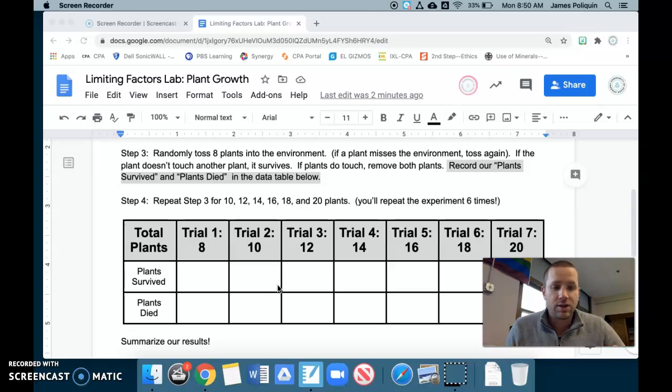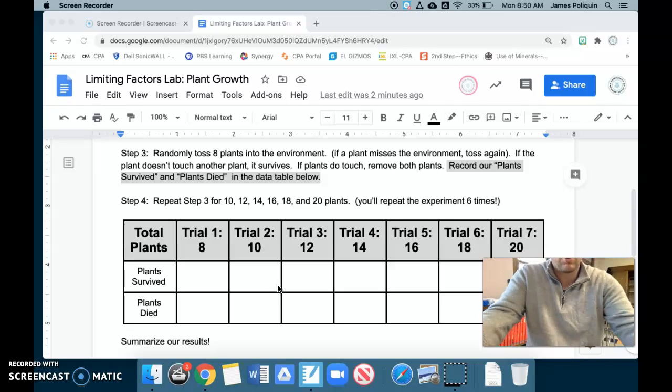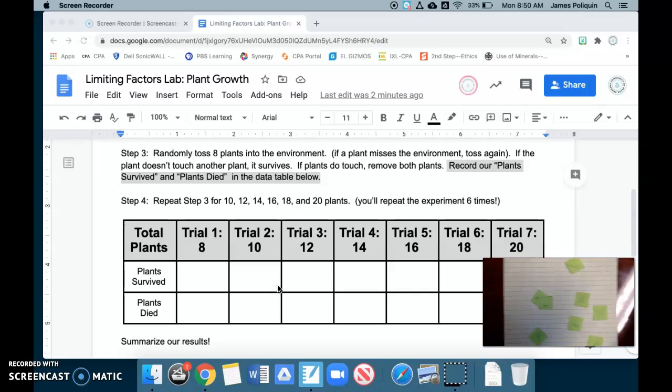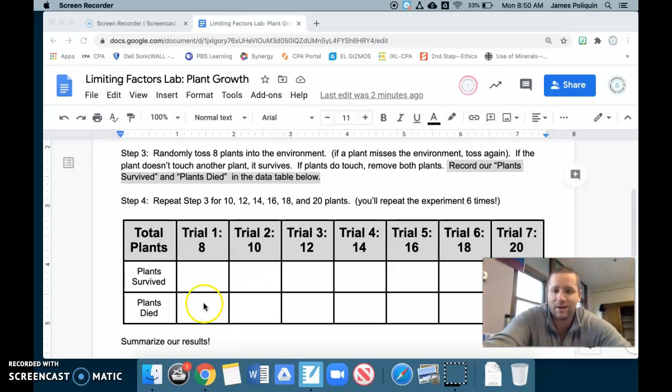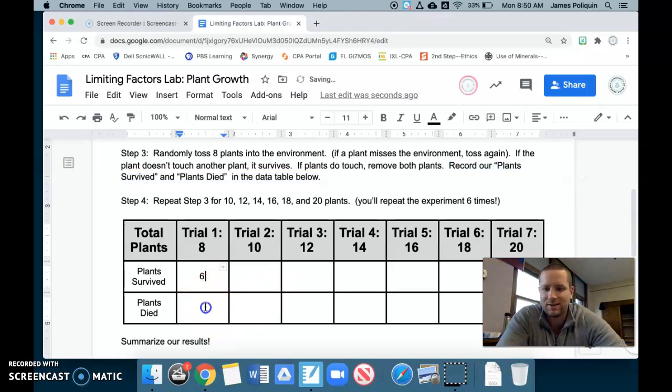So I've just tossed all my plants. Let's take a look at our results. So when we look down at our ecosystem, check it out. I have tossed one, two, three, four, five, six, seven, eight plants in. Six of them are not touching any other plant. Two of them are. So that means six plants survived, two plants died. So in my data table here, I'm going to type in six plants survived, two plants died. If you're doing this at home on your own, record yours. How many plants survived in your experiment? How many plants died in the first trial with eight?